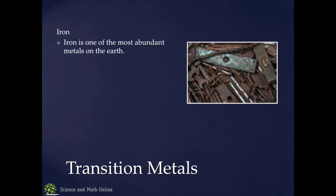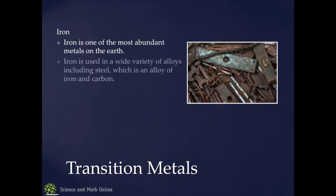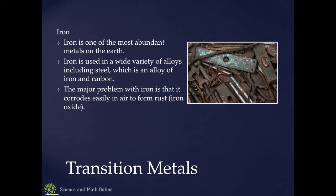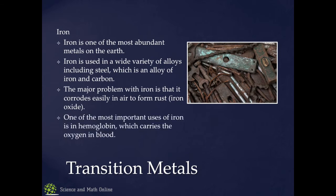Iron is one of the most abundant metals on the entire planet, used in a lot of alloys. Steel is an alloy of iron with just a few percentage points of carbon. A big problem is that it rusts — that's why we have stainless steel. Iron is also used in hemoglobin in your blood; the heme group in the center has iron in it, and that is part of what gives blood its red color.